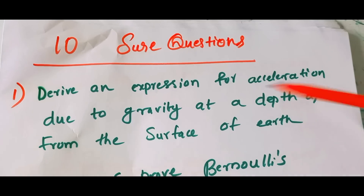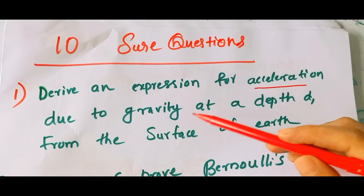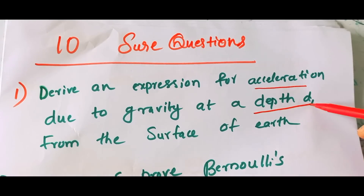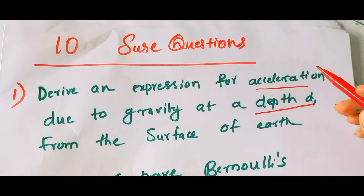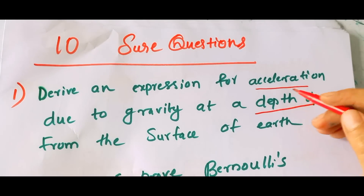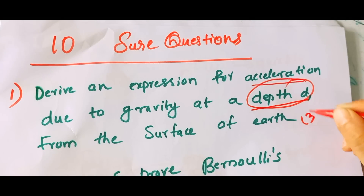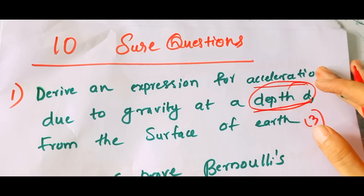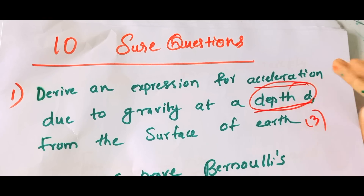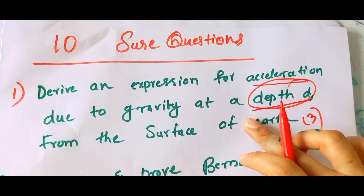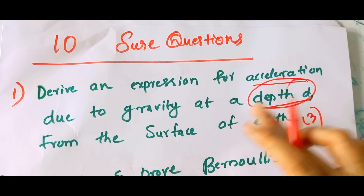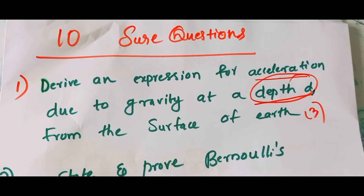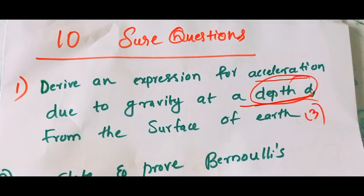The first one is: Derive an expression for acceleration due to gravity at depth D. You can study the model above the surface. Acceleration due to gravity below the surface of the Earth, or at depth D.